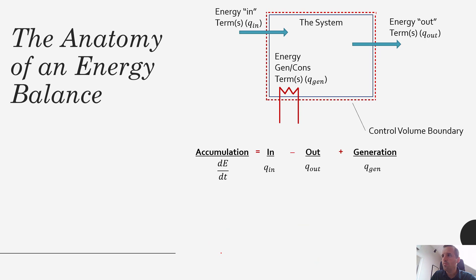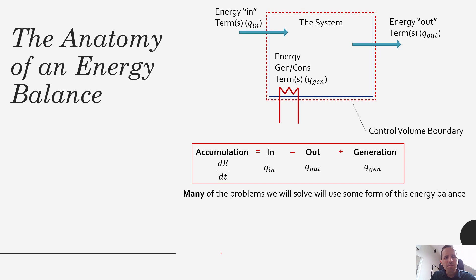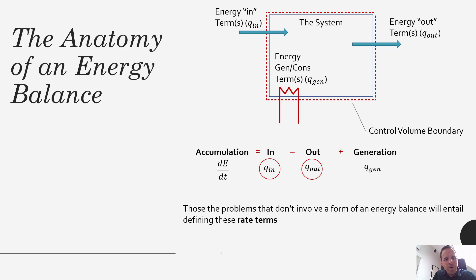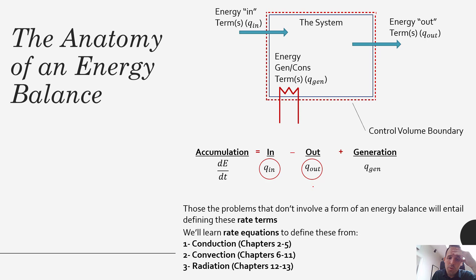Many problems in this class will use this rate of change form of the energy balance — it's the most common form. There will also be rate problems that don't necessarily require a full energy balance, where you just need to know how fast energy is leaving, coming in, or being generated. In that case, we use the laws of heat transfer to find the in and out terms. These rate equations come from the three modes: conduction, convection, and radiation, which we'll introduce in the next few lectures.